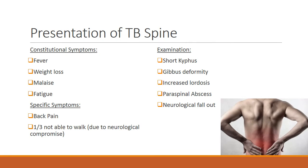The presentation of TB spine. A detailed patient history should explore TB constitutional symptoms such as fever, weight loss, malaise and fatigue. Special inquiry regarding back pain and neurological compromise should also be noted. On examination, signs of spinal tuberculosis include a short kyphus, gibbous deformity, increased lordosis, paraspinal abscess and neurological fallout.